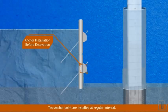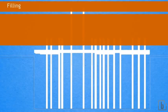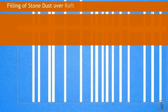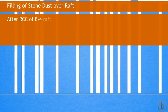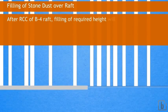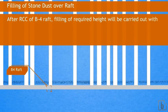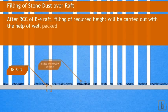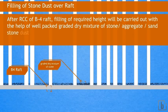Filling of stone dust over raft: after RCC of B4 raft, filling of required height will be carried out with the help of well-packed graded dry mixture of stone, aggregate, sand, and stone dust up to required height. The filling will be carried out at stages depending upon the height of filling.